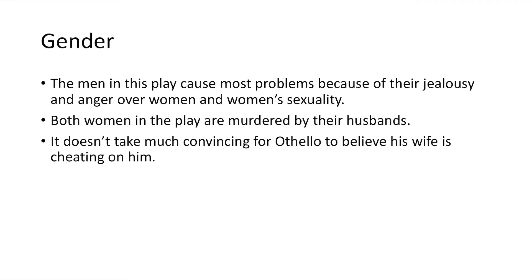Gender is another prominent theme. The men in this play cause the most problems because of their jealousy and anger over women and women's sexuality. Othello kills his own wife Desdemona, and Iago kills his wife Emilia — both women in the play are murdered by their husbands. It doesn't take much convincing for Othello to believe that his wife is cheating on him and that he has been cuckolded.